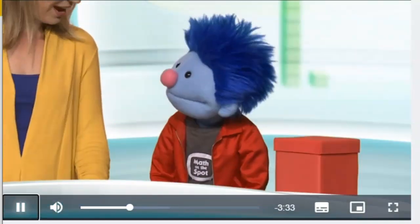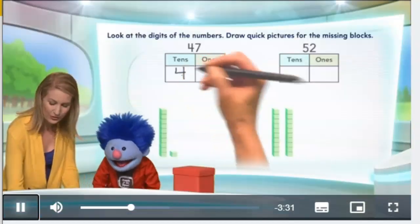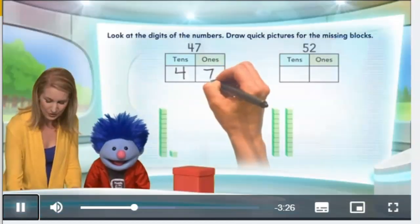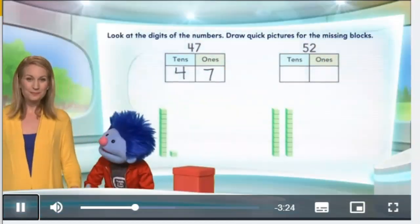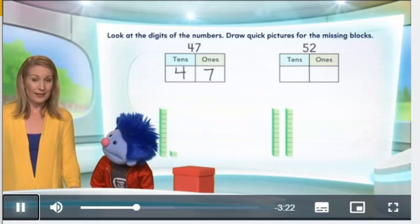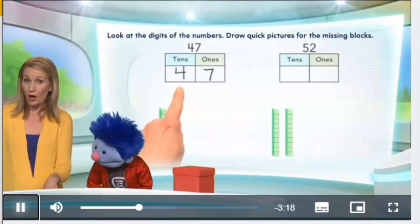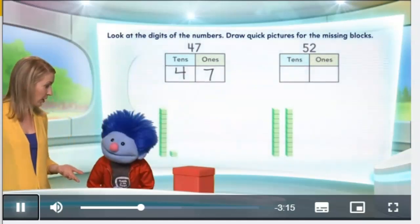There's four. Good job. Yes, there are four tens. How many ones are there? Seven. That's right. You're such a good student, Joey. Thanks. So if we're going to draw four tens, how many lines do we draw? Four.